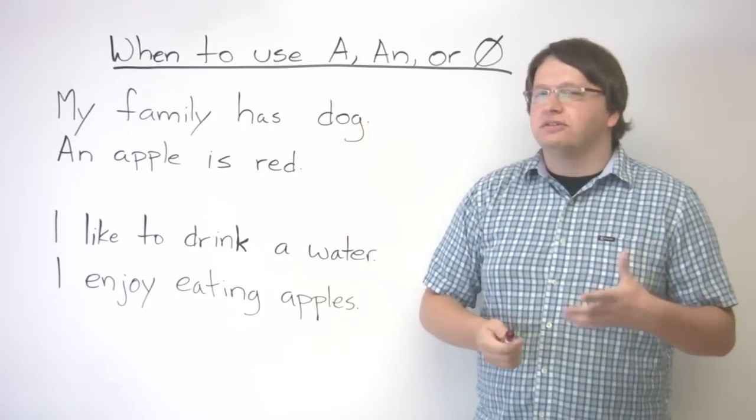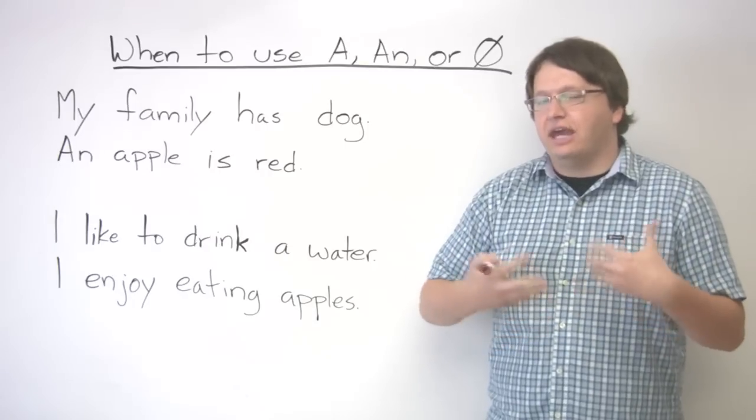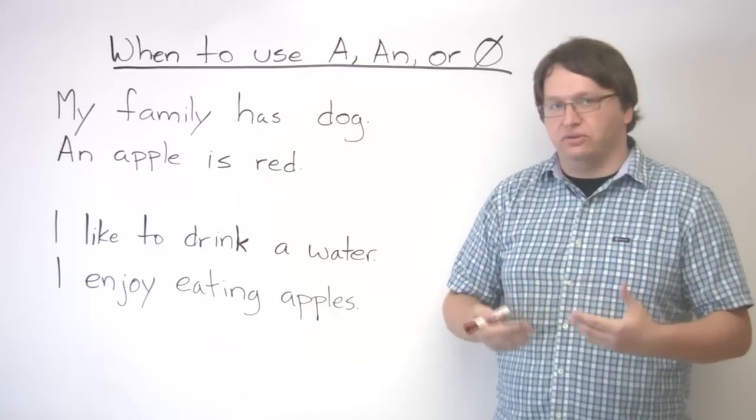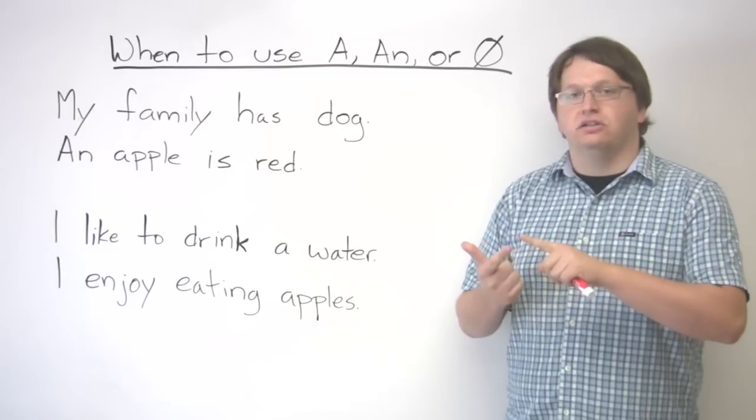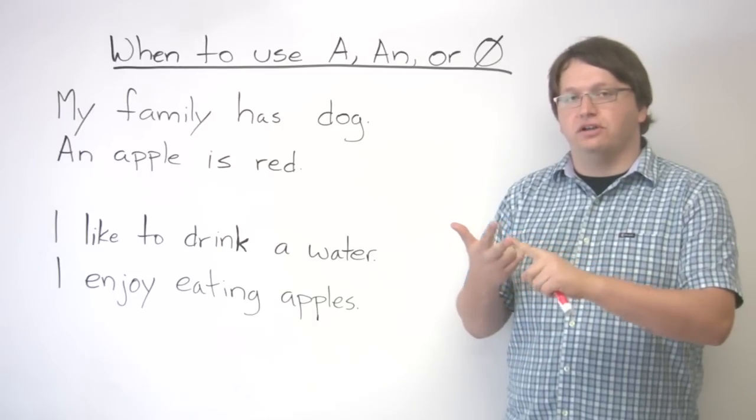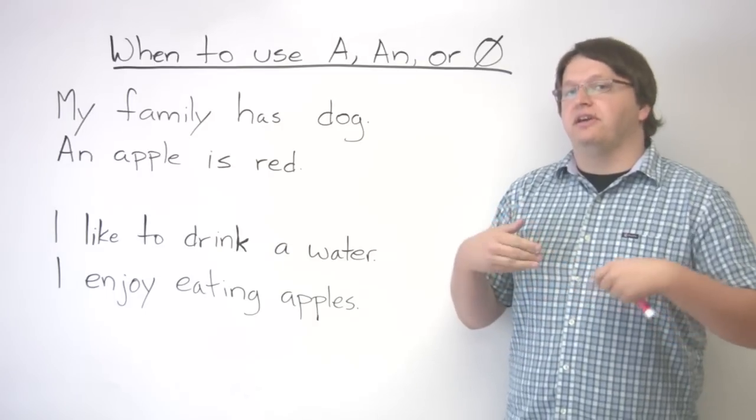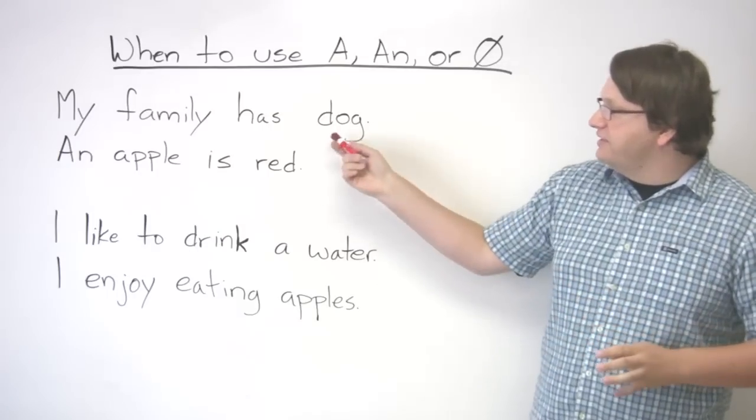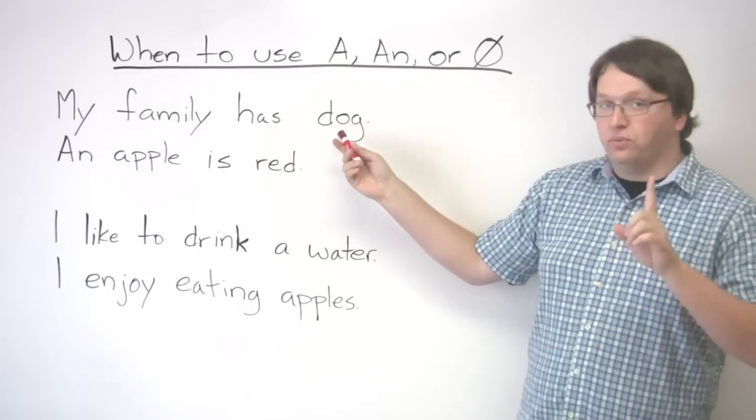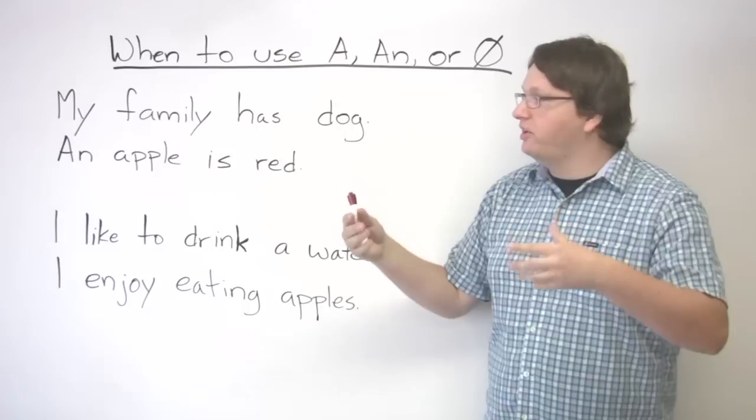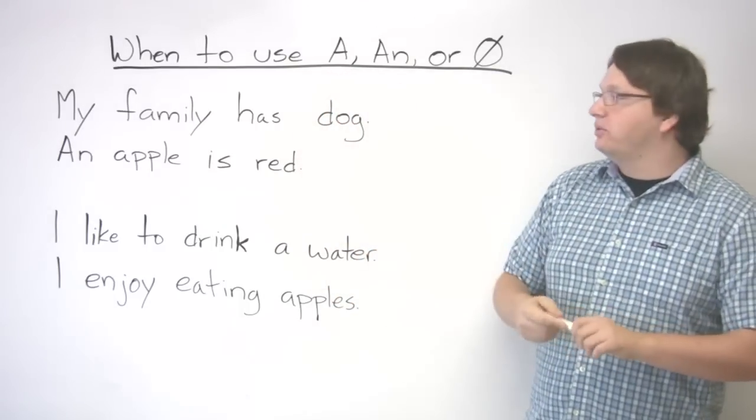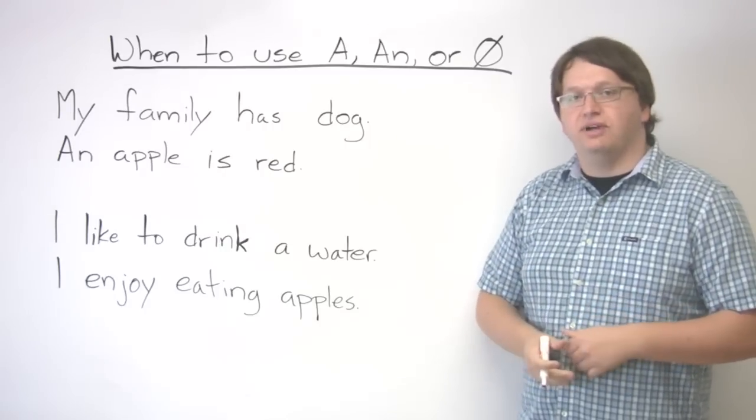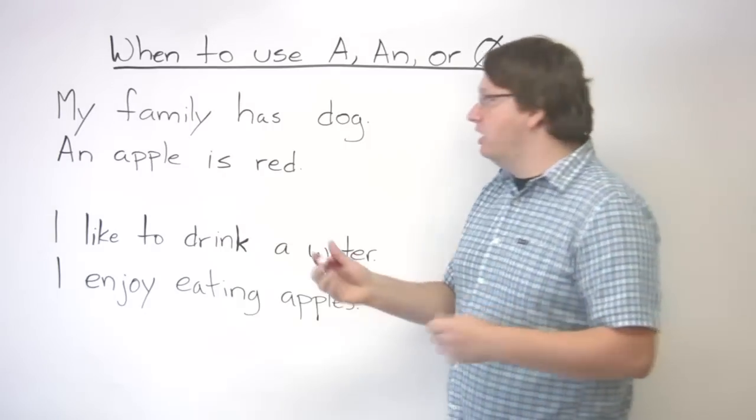Can you count dogs? Is it a count noun or a non-count noun? Okay, if it is a count noun, meaning if you can say one dog, two dogs, three dogs, four dogs, then if it's in the singular form, so just one dog, but you can count more, but it's only one, you have to use an article. Okay, so you can't say my family has dog. You have to say my family has a dog.